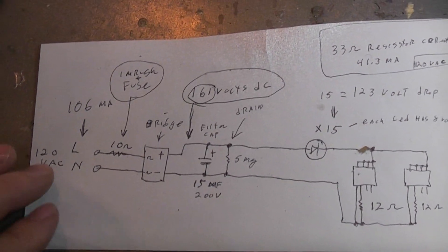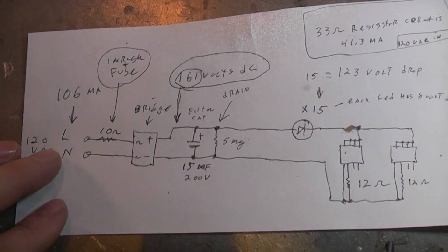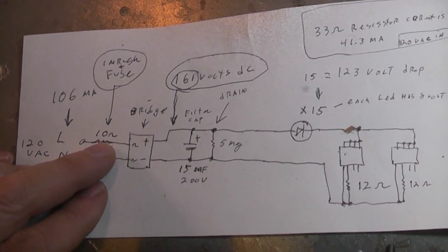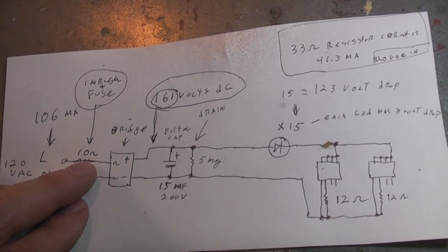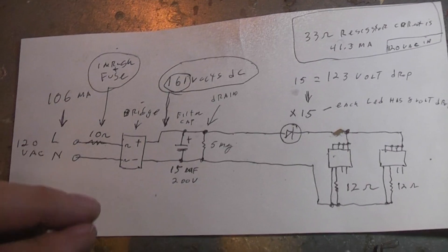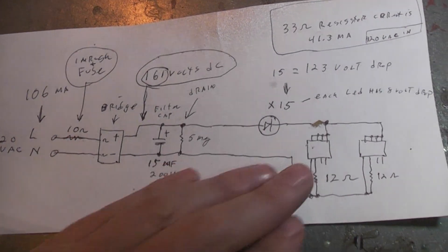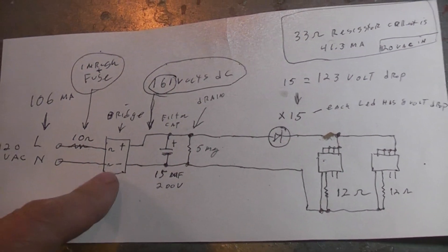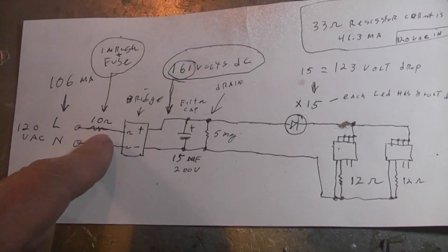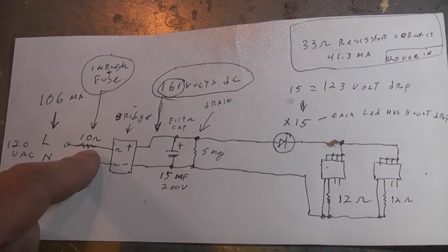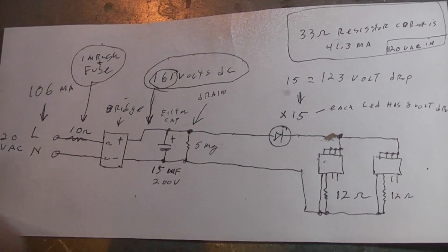You can see you've got your 120 volts AC coming in. They run it through a 10 ohm resistor which both works as an in-rush protection device but also as a fuse. So if something goes terribly wrong, like the bridge rectifier shorts out, then that little resistor is going to burn up. It should stop your house from burning down.